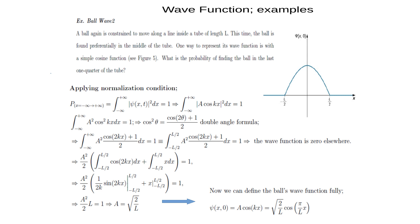Now what is the probability of finding the particle in the last quarter? We take the square of our function and integrate it — the probability density integrated from L/4 to L/2. We also need the value of constant A, so we use the normalization condition again.